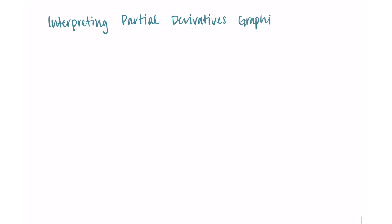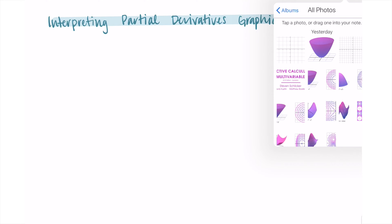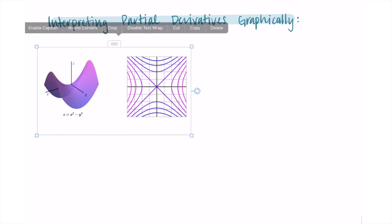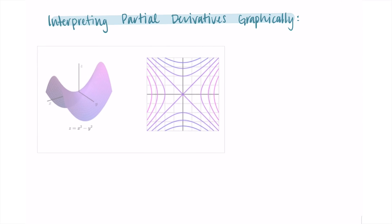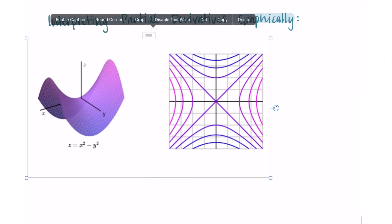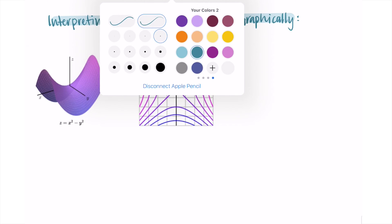The way I want to do this is to compare the three-dimensional model to some level curves and talk about the rate of change at different points. I'm going to return to this shape I've used a couple of times — it's a Pringle-looking thing, like a Pringle chip, or maybe a saddle is another way to describe it.